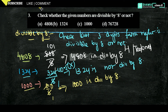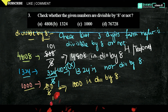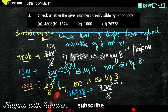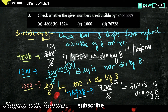Our last example is 76728. The last three digits are 7, 2, 8. So we check if 728 is divisible by 8. 8 nines are 72, then 8 ones are 8, so yes — 728 is divisible by 8. Therefore, 76728 is also divisible by 8. That is how we check the divisibility rule of 8. Thanks for watching. Please subscribe.